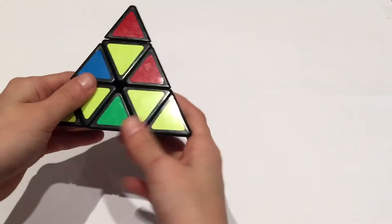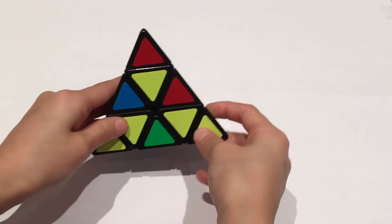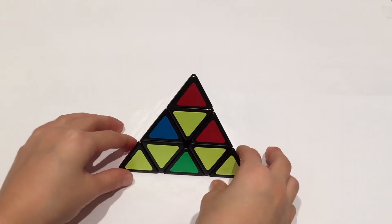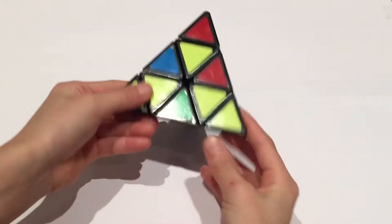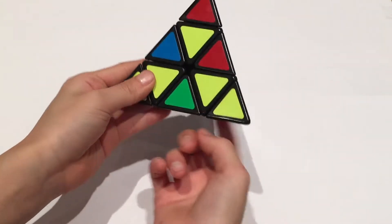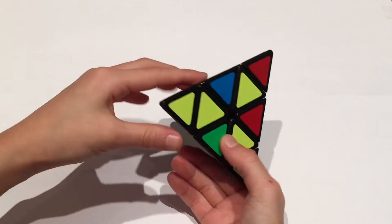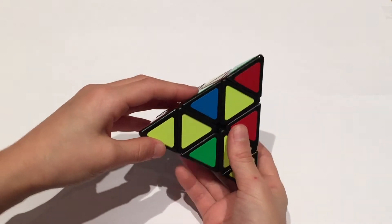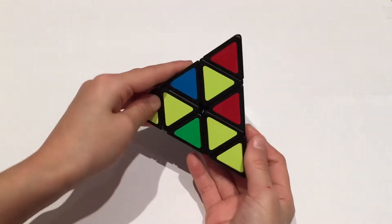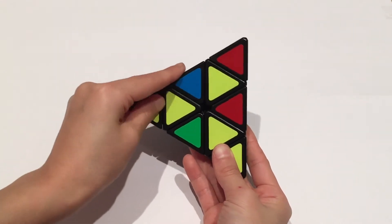Now we're going to be moving on into moving these centers into their correct spots. So you want to find a piece that has whatever face you want to make. So since I made blue, I want to find an edge with blue on it. So here's an edge with blue on it, and the other color is green. So I'm going to move it to the area where there's green on it.